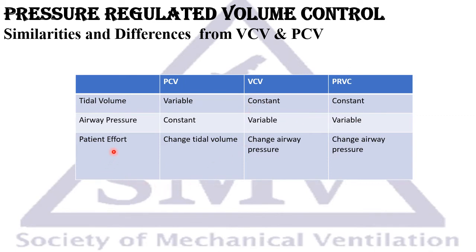Regarding patient effort: in pressure control, more patient effort raises tidal volume; if passive, tidal volume falls. In volume control, more patient effort lowers airway pressure. The same occurs in PRVC — as the patient breathes more and tidal volume rises, the ventilator reduces airway pressure to compensate.